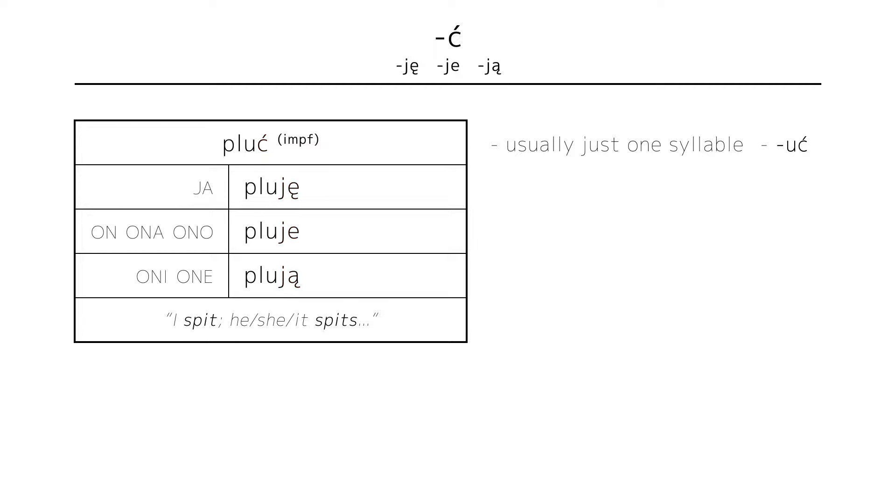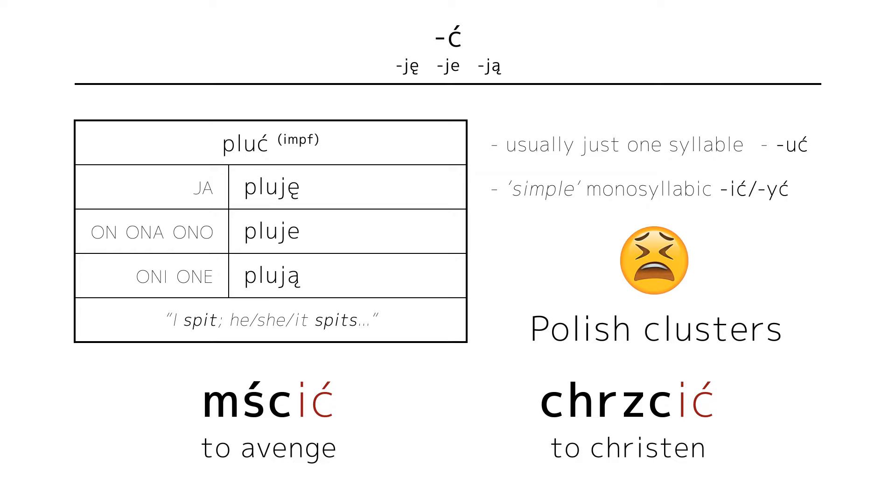Now, I said ĆUĆ and ĆUĆ would make a comeback, so here it is. This verb type also applies to monosyllabic YĆ verbs that are simple. Now, simplicity is arbitrary, but verbs like MYĆĆ or CZYĆĆ don't belong here, is what I'm basically saying.